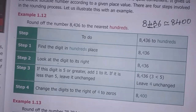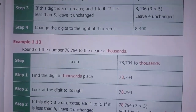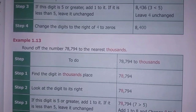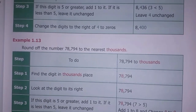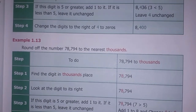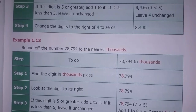Next example is 1.13. Round off the number 78,794 to the nearest 1,000. We are rounding to 1,000 as stated.